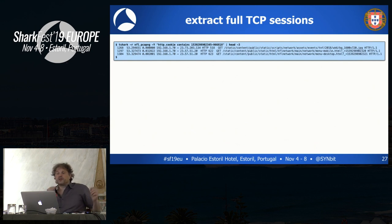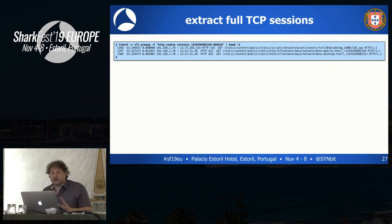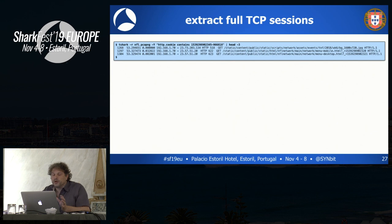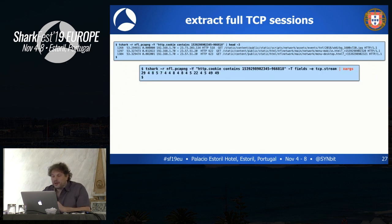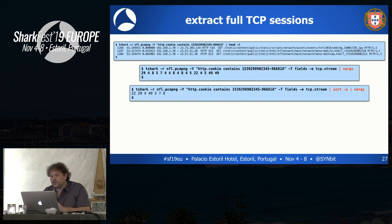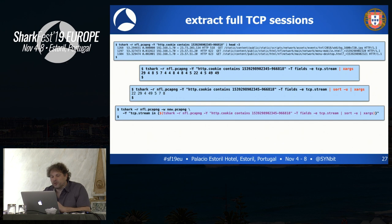Expanding on this technique — which I use a lot — if you read a trace file and are interested in all the TCP sessions that have a certain cookie value, you can use the same technique. Filter on the cookie, create a list of TCP stream numbers, sort to get unique numbers, and then use that in a new session to extract those streams from the trace file. Let's do that as an example.